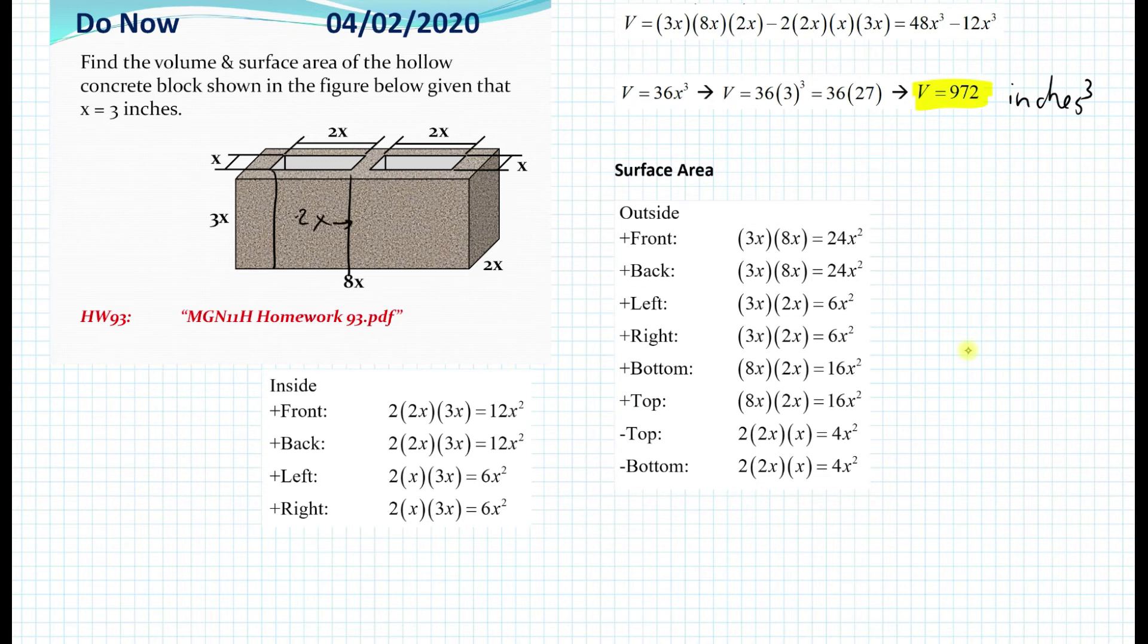from here to here. And the height over here is 3x. So that's why we multiply 2x times 3x over here. But we have two of those. And that's where the 2 comes from over here, this 2. Okay, so then we have a back part, which is exactly the same. So the shape is identical. So it's also 12x squared.